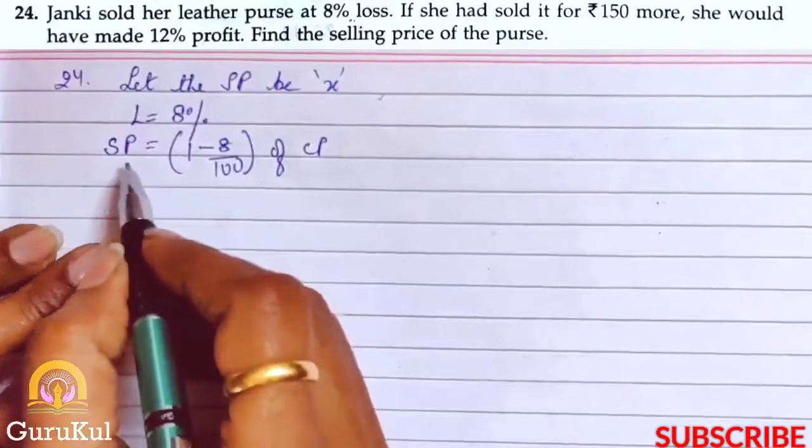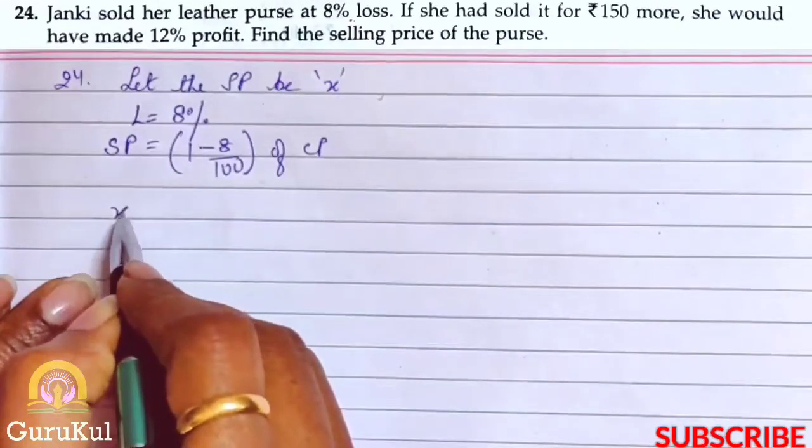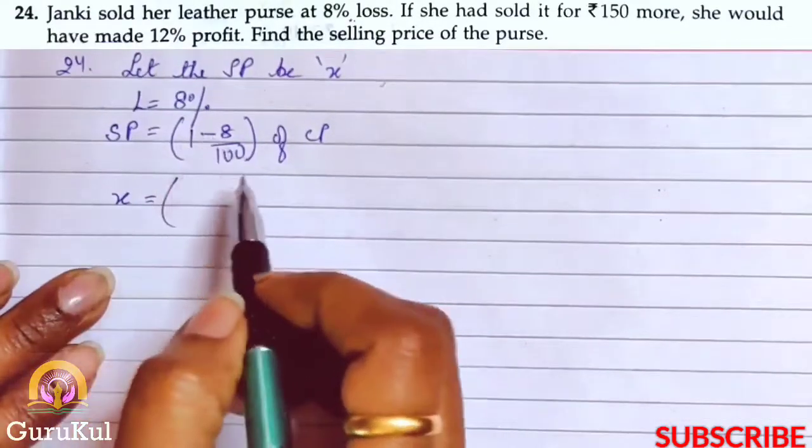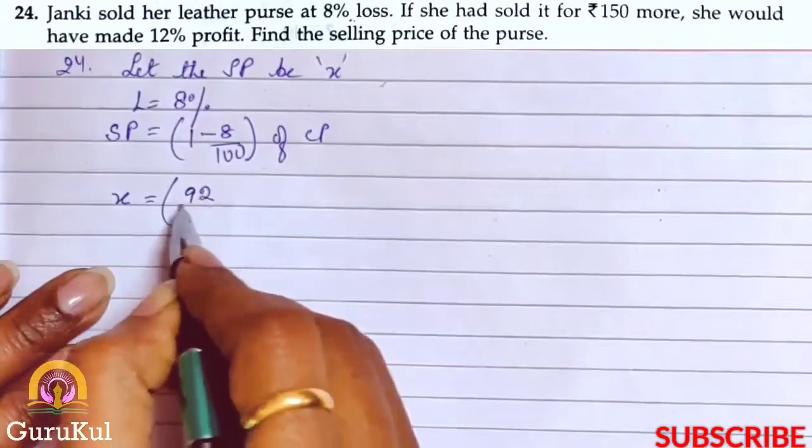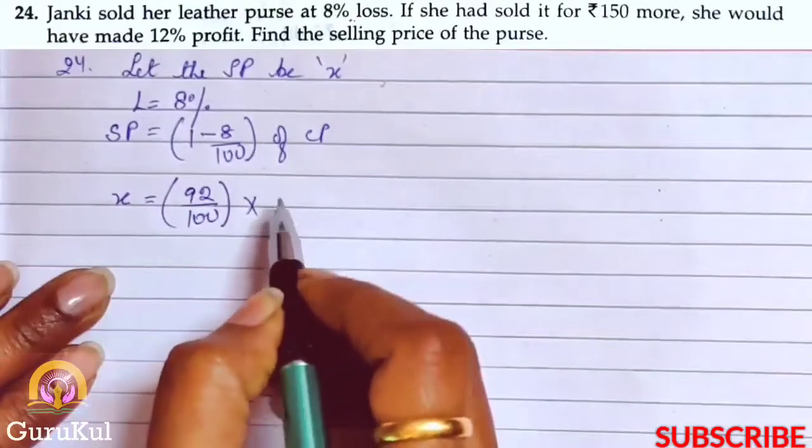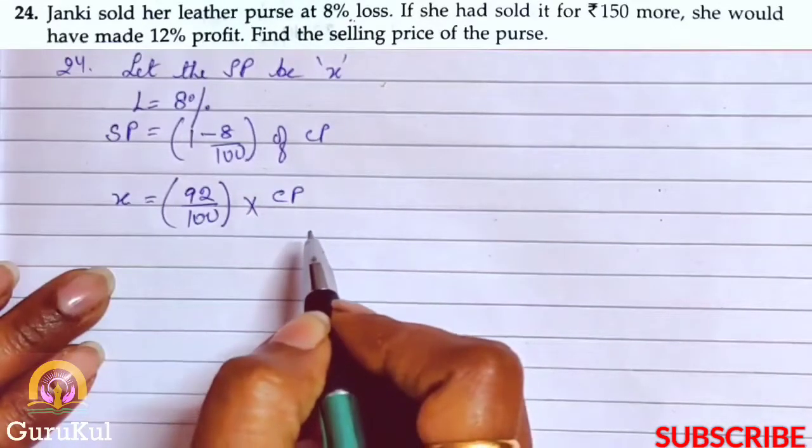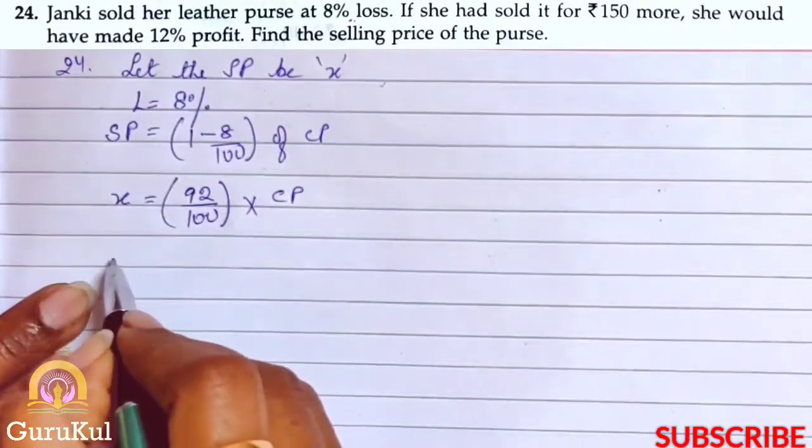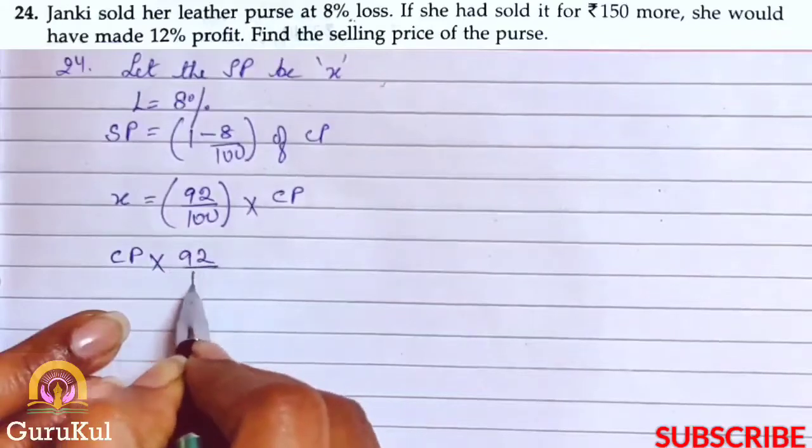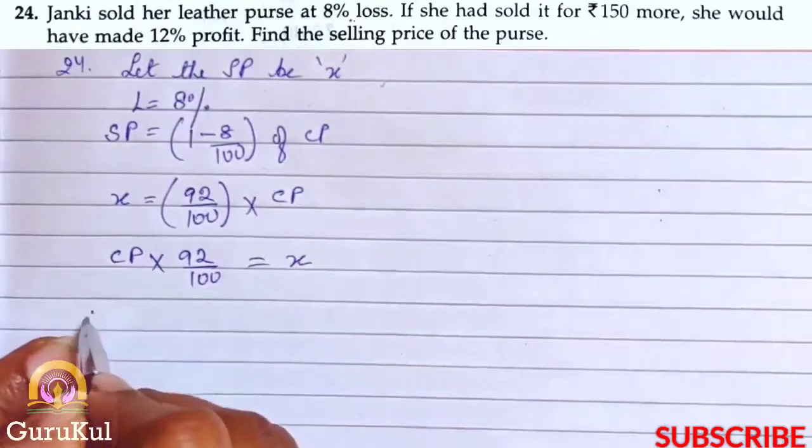We'll write x in place of SP. So x equals 92 by 100 bracket closed of CP. We'll reverse this: CP into 92 by 100 equals x.